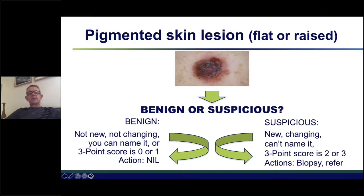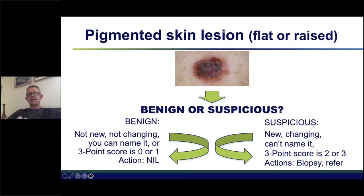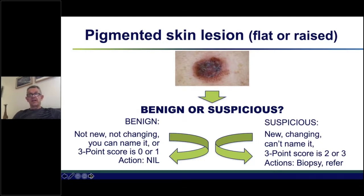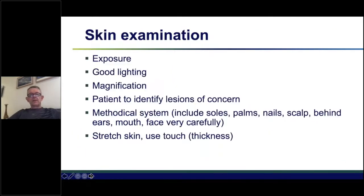Here is an example — a pigmented skin lesion that is either benign or suspicious; it has to be one of the two. There are a small number of criteria listed here, and I teach you how to think through each of these criteria so that at the end of that process it becomes obvious whether any lesion is benign and can be safely left alone, or is suspicious and needs a biopsy. We do this for pigmented lesions and pink lesions.